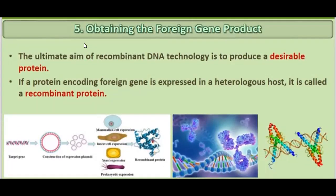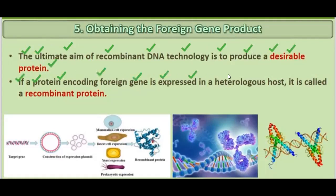Next, we are obtaining the foreign gene product. The ultimate aim of recombinant DNA technology is to produce a desirable protein. If a protein-encoding foreign gene is expressed in a heterologous host, it is called a recombinant protein.